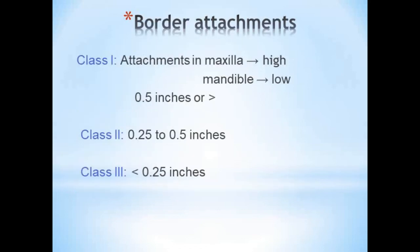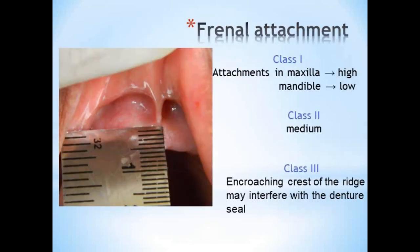Coming to the classification of mucosal attachments or border attachments: Class 1 attachments are high in the maxilla or low in the mandible, with 0.5 inches or more between the level of attachment and the crest of the ridge. Class 2 is between 0.25 and 0.5 inches, and Class 3 is less than 0.25 inches. Frenal attachment is classified similarly by House: Class 1 is high in the maxilla or low in the mandible, Class 2 is medium attachment, and Class 3 is where the frenum encroaches onto the crest of the ridge and may interfere with the denture seal, requiring surgical correction.